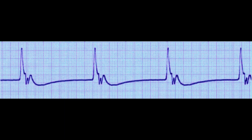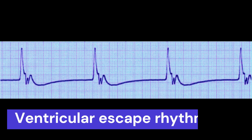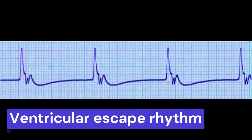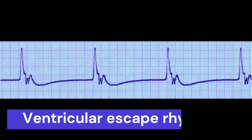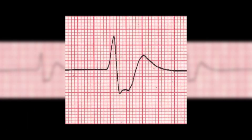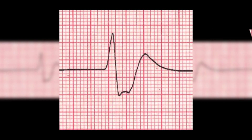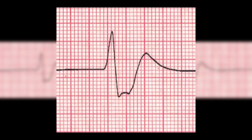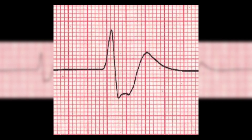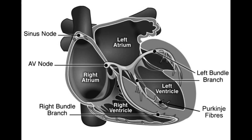Idioventricular rhythm, also known as ventricular escape rhythm, is a type of cardiac rhythm that occurs when the normal electrical impulses that regulate the heart's rhythm are disrupted. Instead of being controlled by the sinoatrial node, the heart's electrical activity originates from the ventricles themselves.